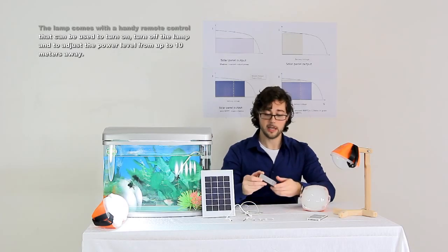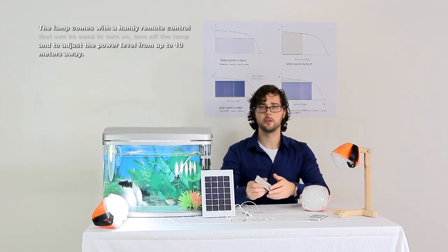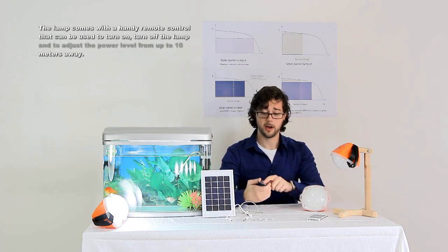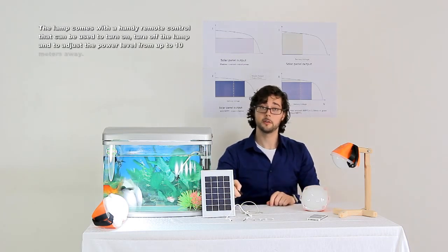The lamp comes with a handy remote control that can be used to turn on, turn off the lamp, and adjust the power level from up to 10 meters away.